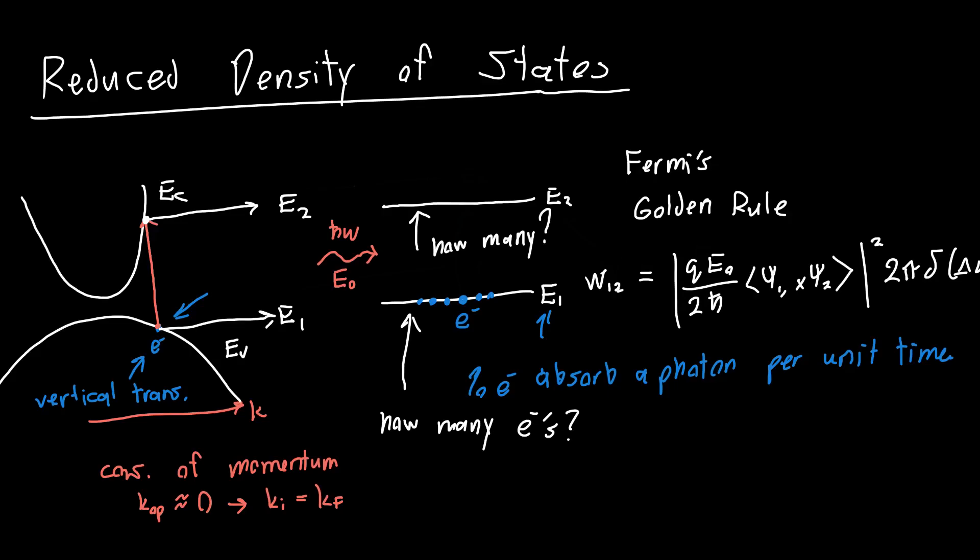And we actually know that number. We can actually calculate that. That's just our density of states. In this case, this is our density of states in the valence band. And really, we should also multiply by the Fermi factor, but I'm going to ignore that for now and just deal with the density of states.